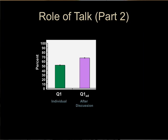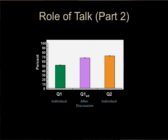Students were then asked a second question on a similar topic and were asked to respond without talking to each other. The researchers found that about 75% of students could solve it correctly, indicating that students had learned something from the first question that they could apply independently. We find this to be quite compelling proof that students aren't just getting the correct answer from their peers, but are actually learning something they can use in the future.